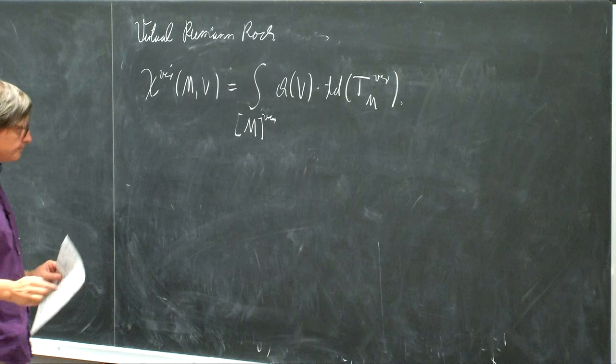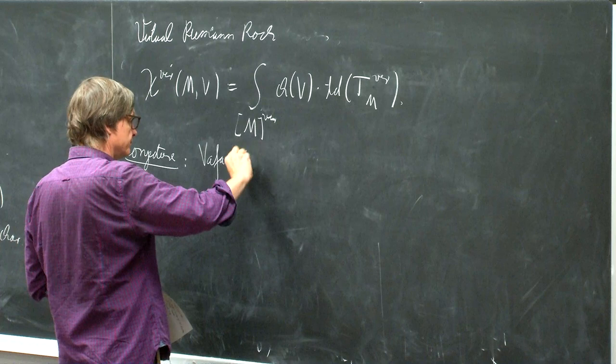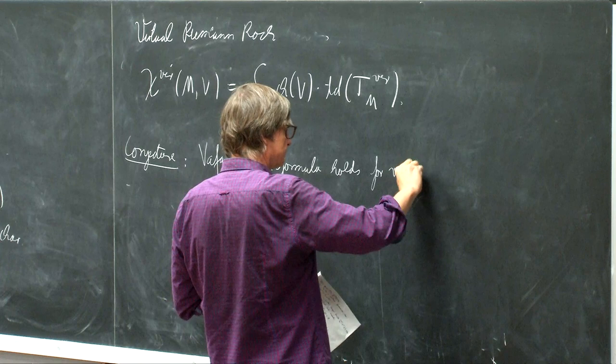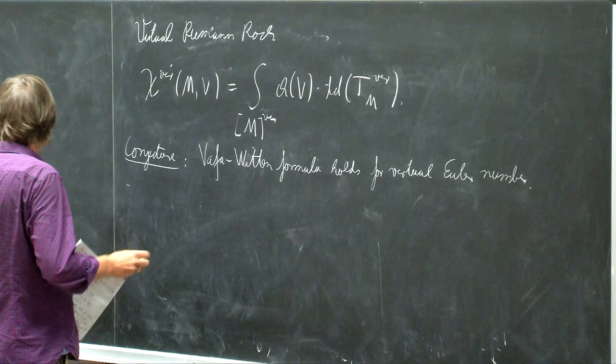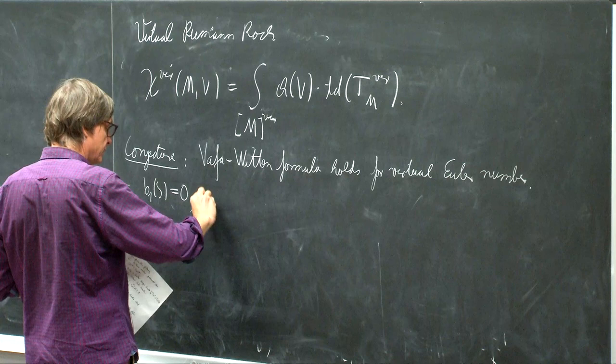Now in this context, our conjecture is that the Vafa-Witten formula holds for these virtual invariants, specifically for the virtual Euler number. I should remind you that our assumption for this was that the first Betti number of S was supposed to be 0, and we were assuming that the geometric genus of S was bigger than 0, meaning there are holomorphic two-forms.